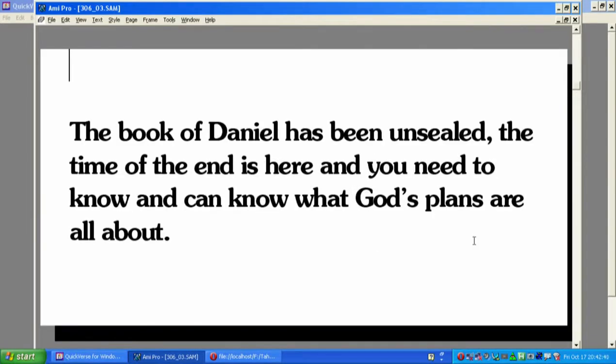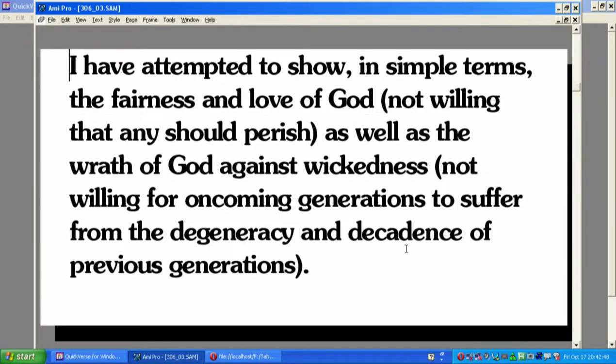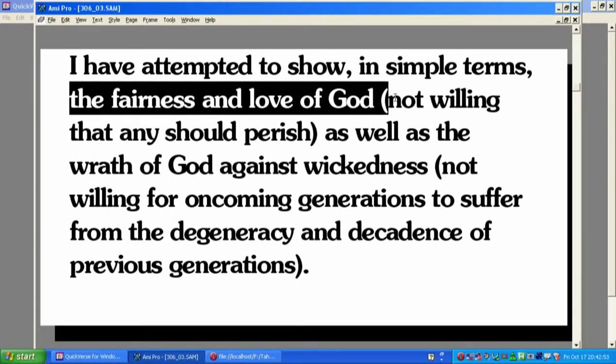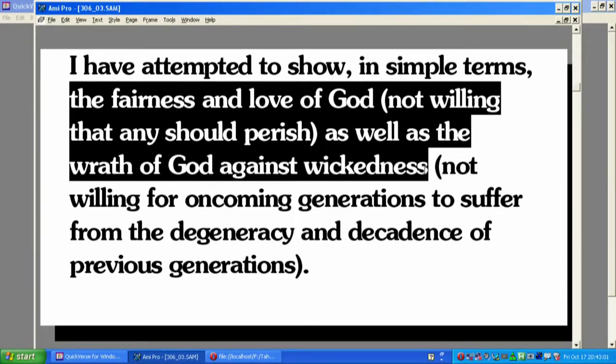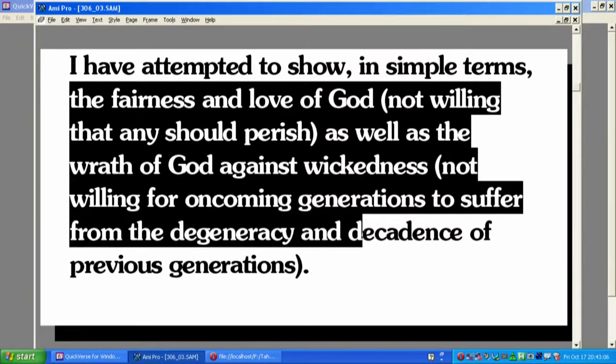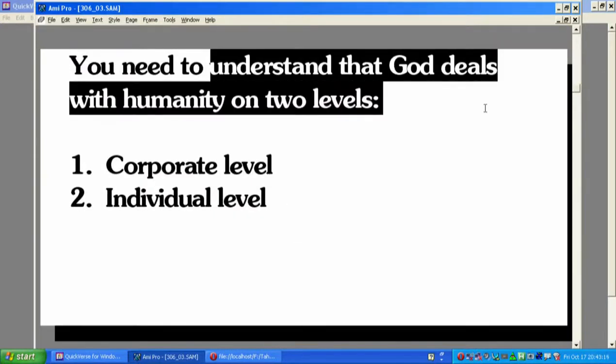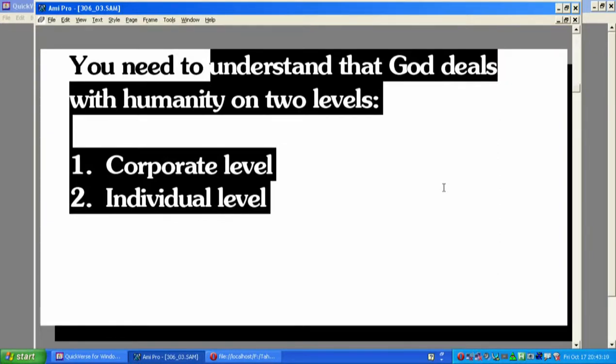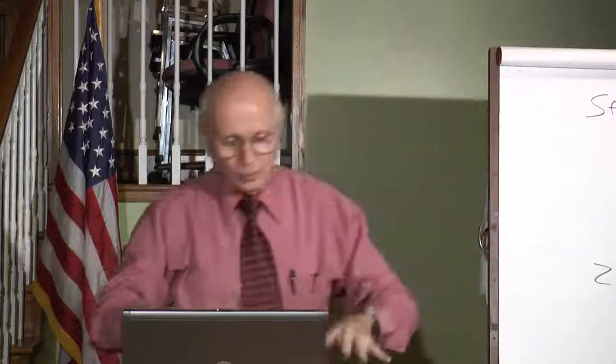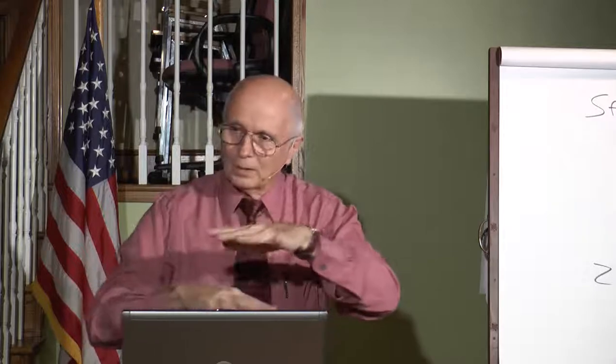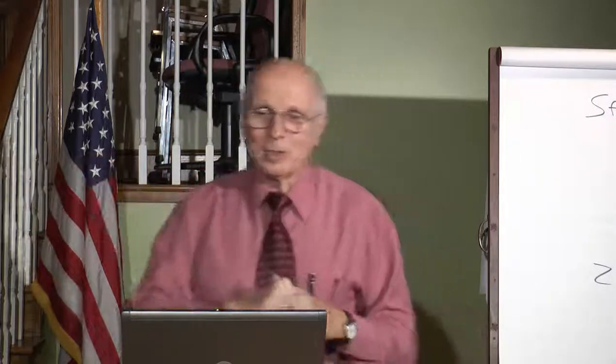The book of Daniel has been unsealed, the time of the end is here, and you need to know and can know what God's plans are all about. I've attempted to show in simple terms the fairness and love of God, that he's not willing that anyone should perish, as well as the wrath of God against wickedness. God deals with humanity on two levels, and after we take a short break we will look at these two levels to understand the difference when God is dealing with a nation, a world, or an individual. Keeping the two levels separate is very important in understanding God's policies and ways. Let's take a break, we'll resume in about ten minutes.